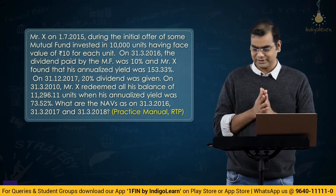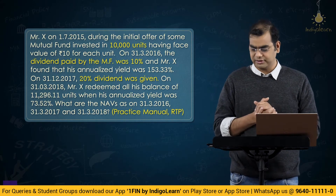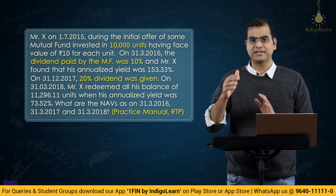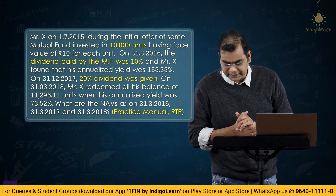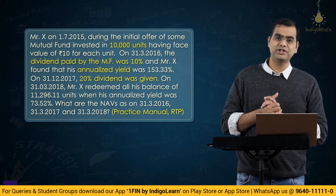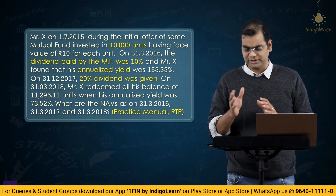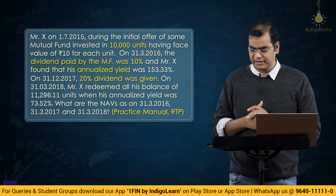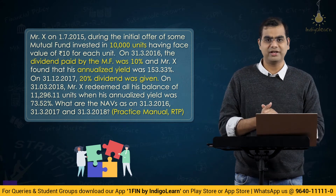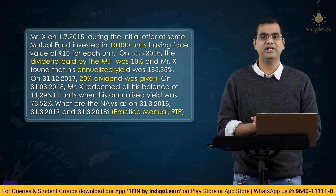This is a very interesting question. The number of units purchased is given, then dividends are given. Since he redeemed all his balance of 11,296 units — meaning the number of units has actually increased — it is a dividend reinvestment plan. The dividend was given and reinvested. After issuance of dividend and the closing NAV on a specific date, his annualized yield was something — 153.33. Then subsequently another 20% dividend was given and finally he redeemed. Basically, it is a 'guess the missing figure' kind of question. Some information is given, some is not. Let us plot the information and put a question mark for what is not given. It is actually a fairly simple one — you just need application of mind.